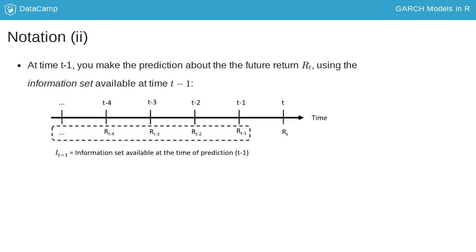Assume that at time t-1 you want to predict the next return R_t. For this you can use the information set consisting of all the past and current returns available at time t-1.